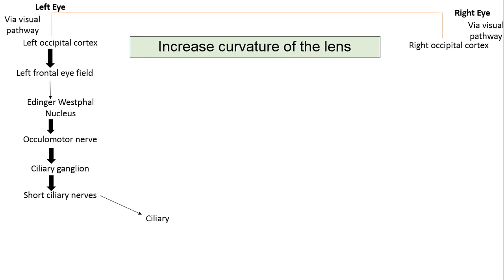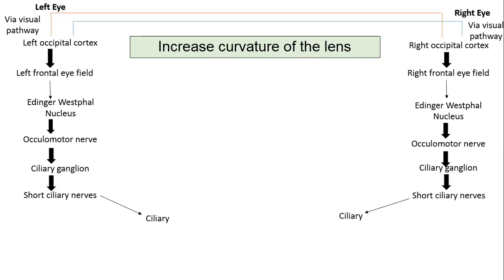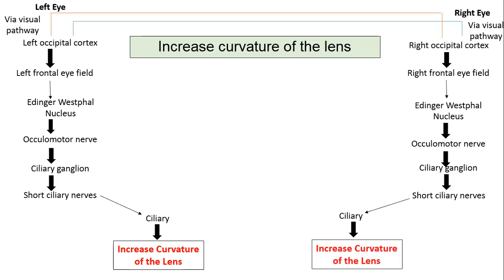The same changes are observed in the other eye simultaneously, and in both eyes ciliary muscle contraction occurs, increasing the curvature of the lens — specifically, an increase in the anterior curvature of the lens.